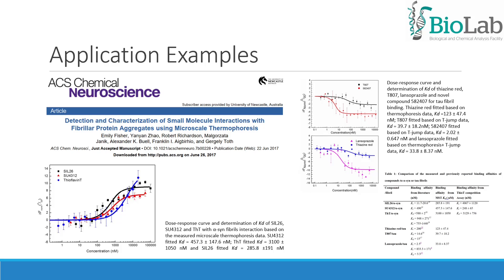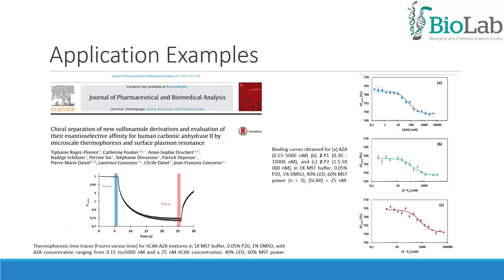MST was applied to assess the binding affinity of known small molecule ligands of alpha-synuclein fibrils, and a MST assay was also developed for the detection of interactions between small molecules and tau fibrils, demonstrating that MST is a powerful methodology to quantify interactions relevant to protein misfolding diseases. Finally, MST was used to measure the affinities of sulfonamide derivatives towards human carbonic anhydrase, with KD values in good agreement with surface plasmon resonance as a reference method.